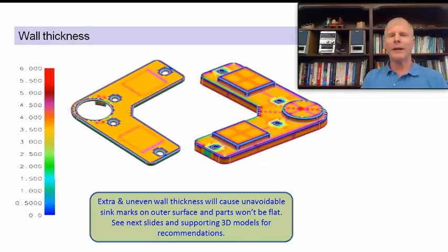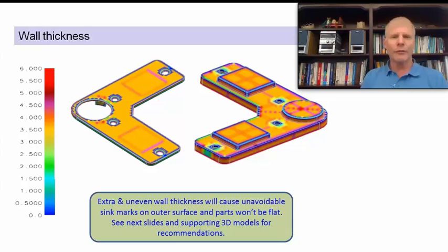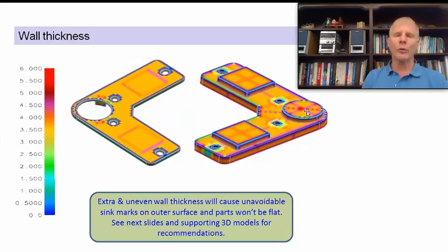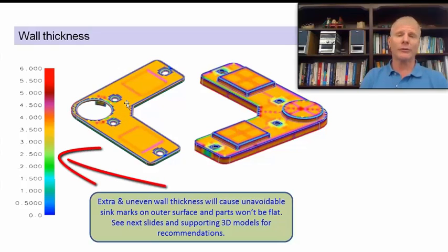On your screen you see a mold flow output. Mold flow is a software program showing you that you have relatively thick walls — here, here, and in fact everywhere where you see either pink or red. That's telling you that the walls are relatively thick, as opposed to the orange which is moderate, and the blue and green which are thinner walls.